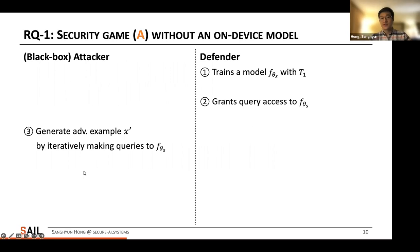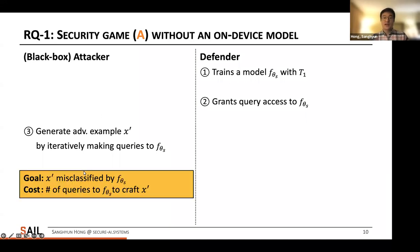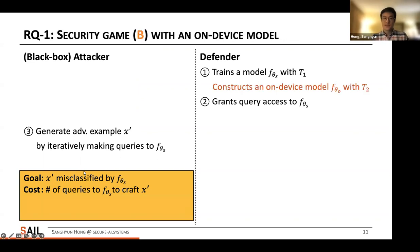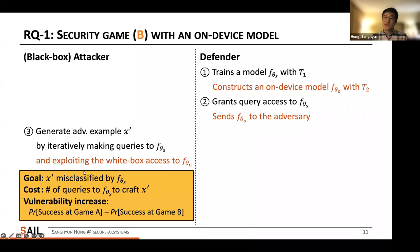Here is security game A considered in prior work. The attacker is on the left and the defender is on the right. The defender trains a black-box server model with T1 and grants access to this server-side model. The attacker generates an adversarial example X-prime by iteratively making queries to the server model. The goal is to fool the black-box server model, and the cost is typically measured by the number of queries. We then look at a new security game B with on-device models. The defender also constructs an on-device model with a construction algorithm T2 and sends it to the adversary. The attacker exploits white-box access to this model to generate adversarial examples. In this game, we are interested in the vulnerability increase measured by the difference in number of queries between the two games.